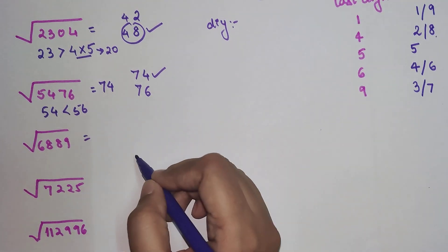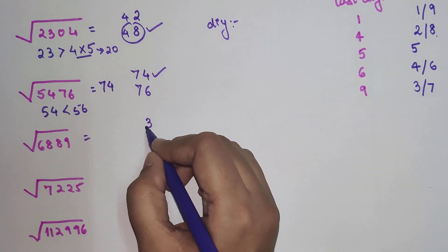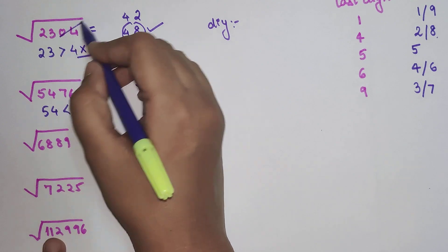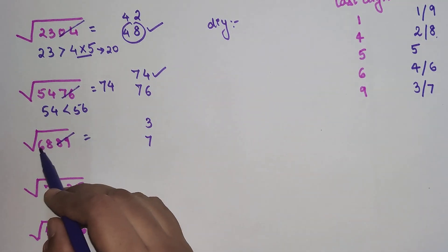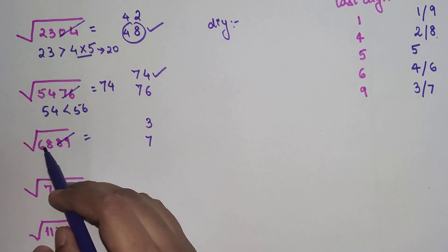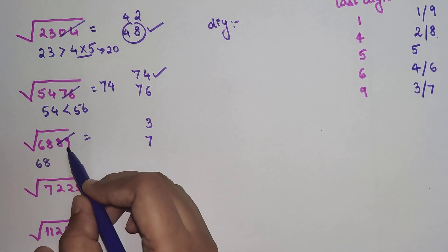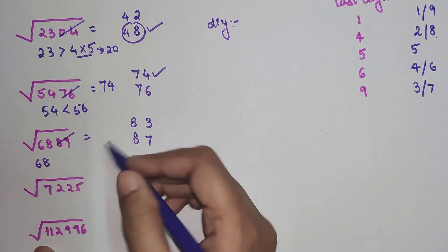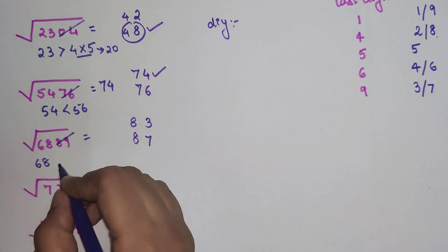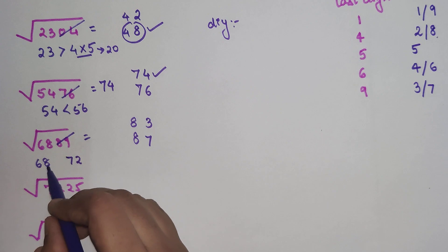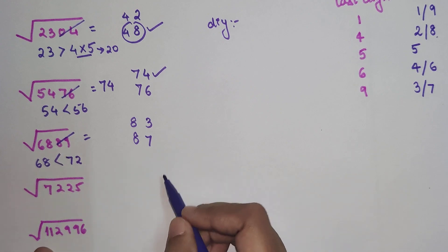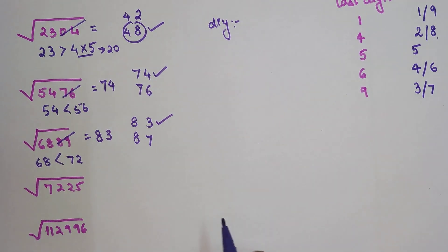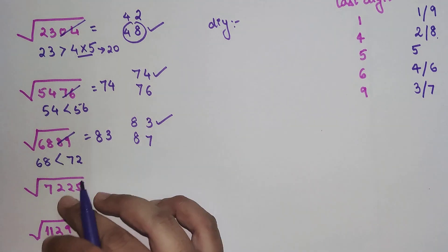Now for the square root of 6889. The last digit is 9, so possible unit digits are 3 or 7. Striking out the last two digits gives 68. Whenever I do this, I eradicate the last two digits and focus only on the remaining digits. 68 is close to 64, which is 8². We multiply 8×9=72. Since 68 is less than 72, we take the lesser value, so 83²=6889.